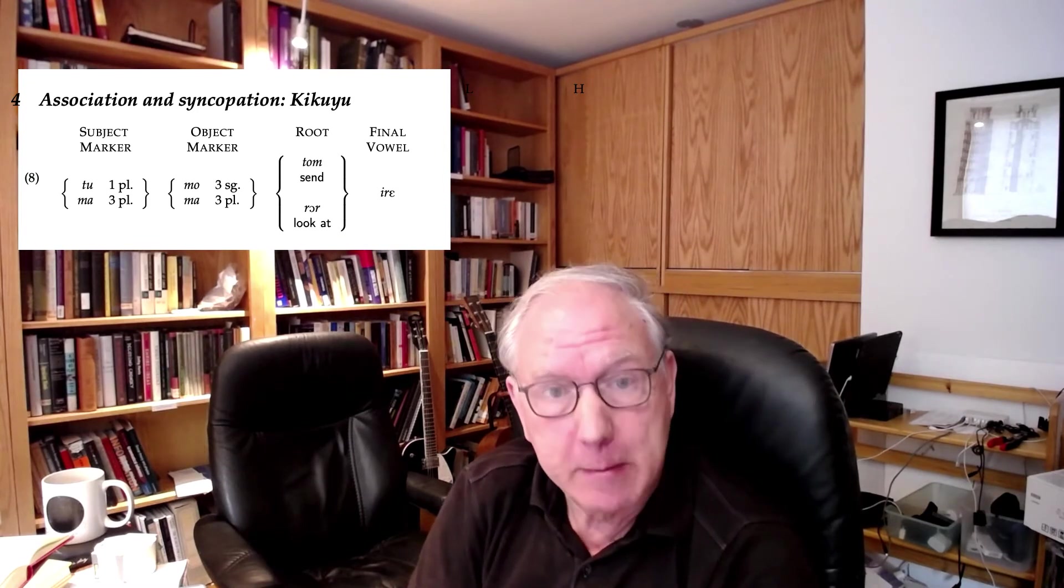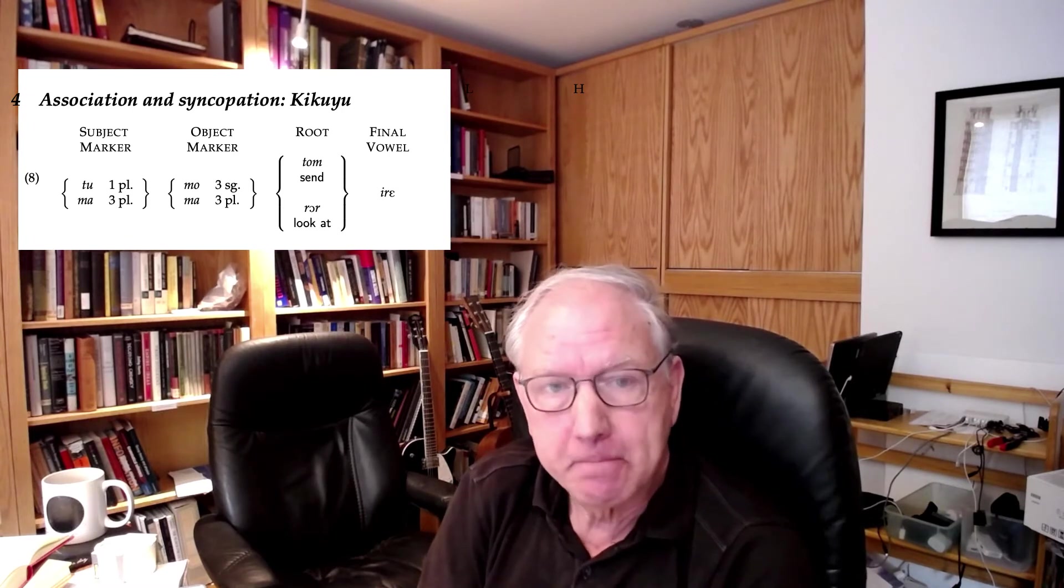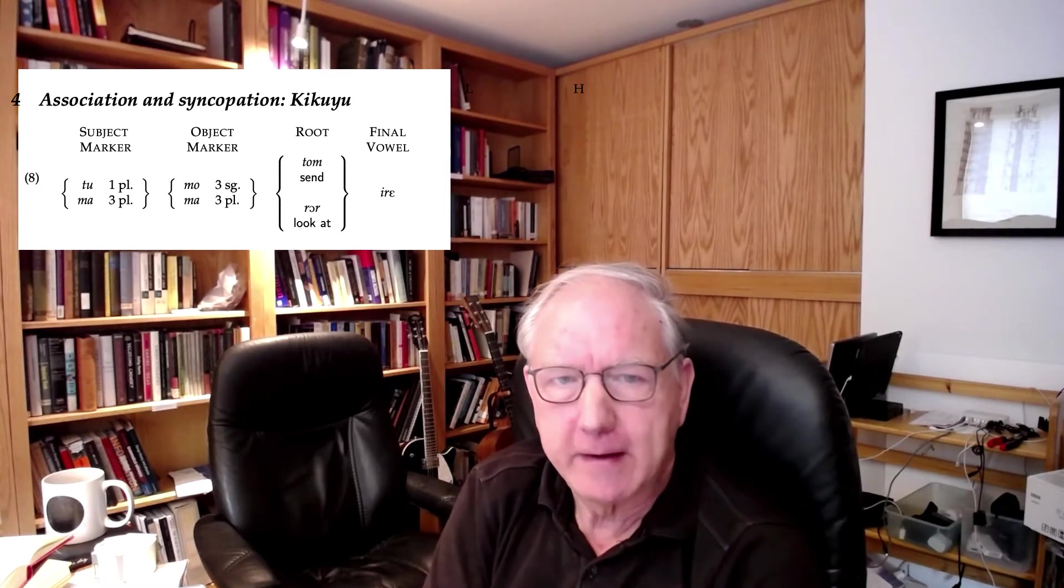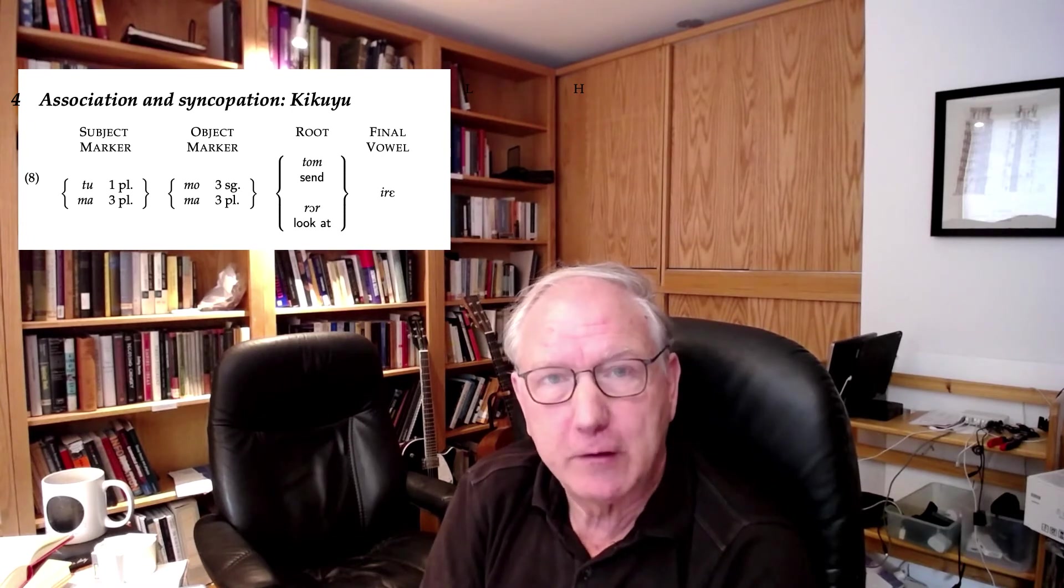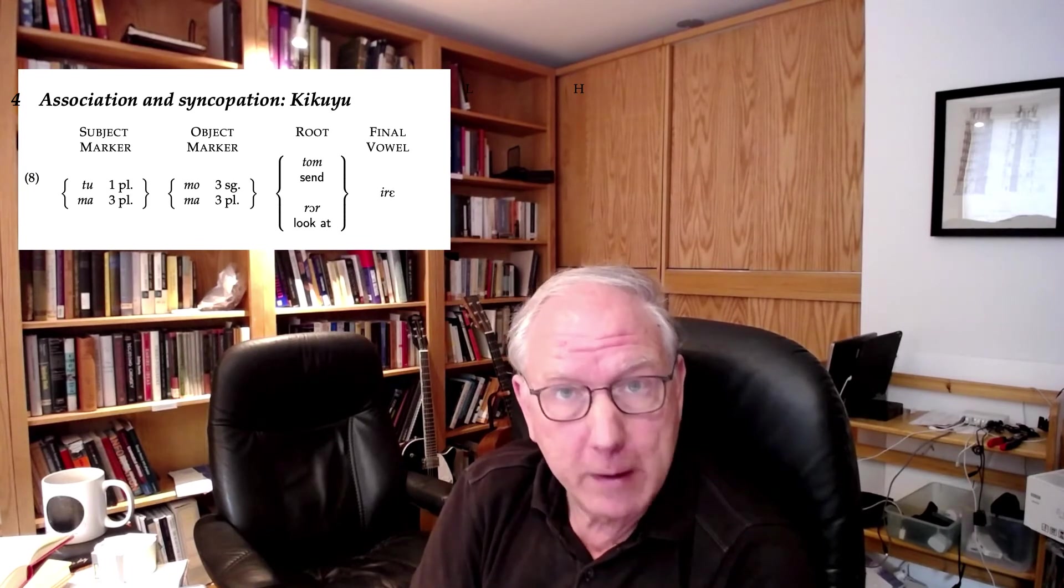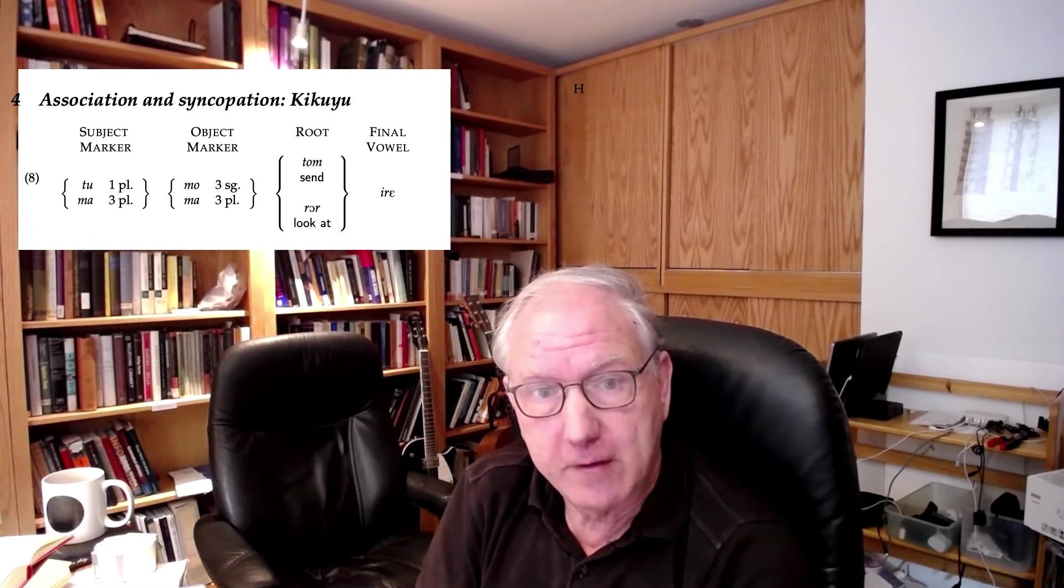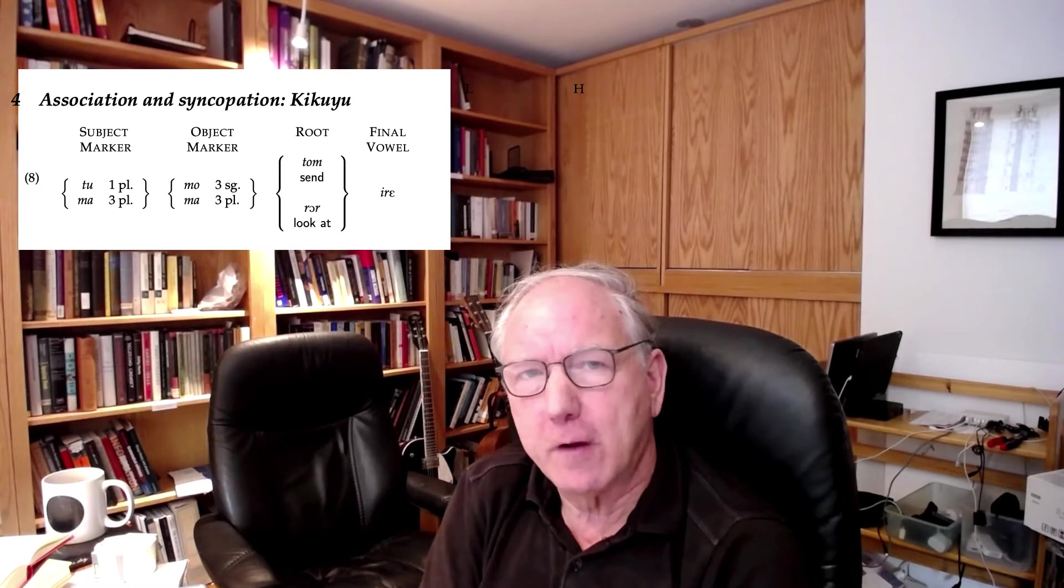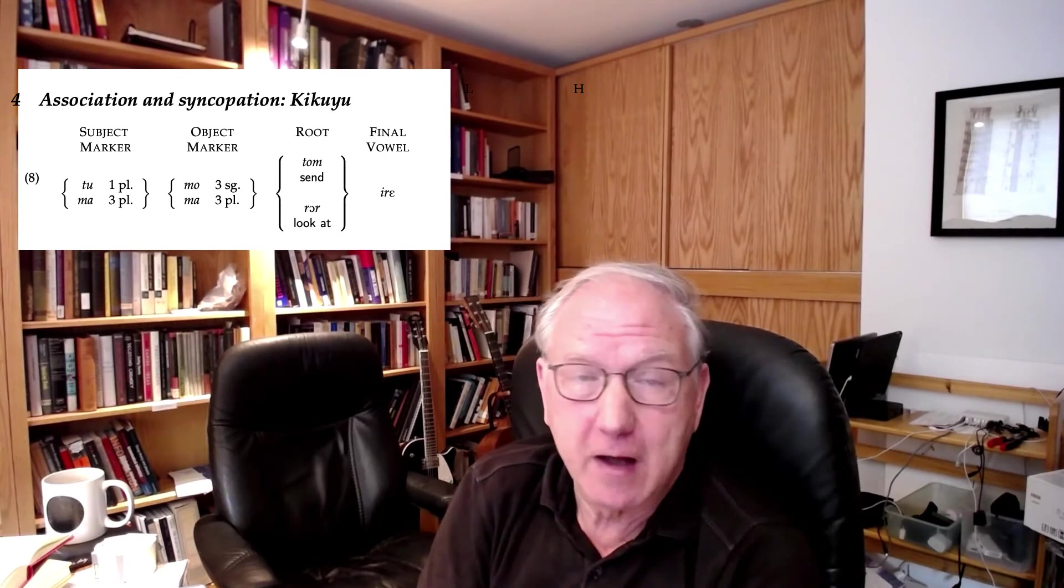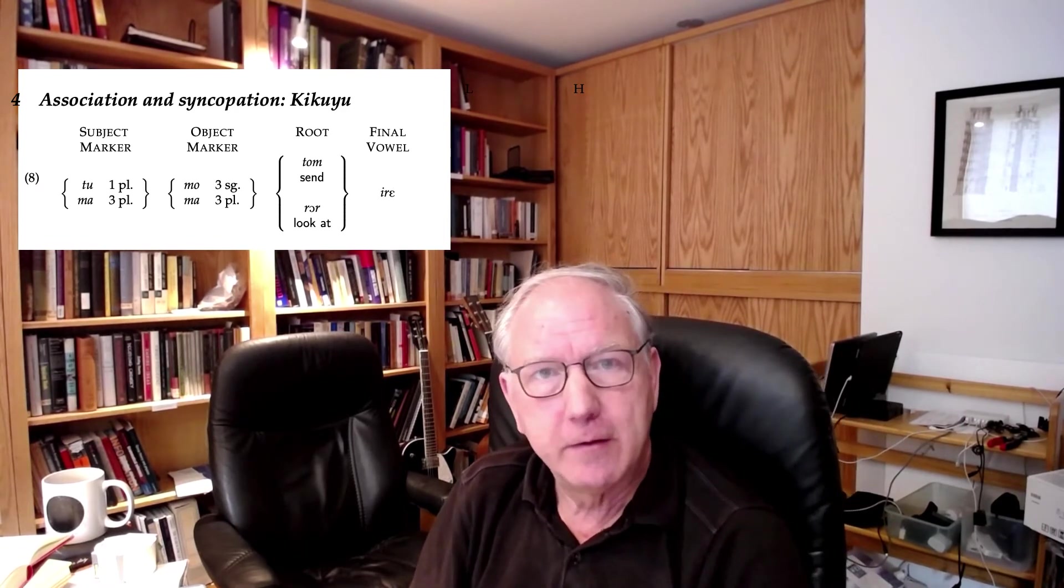We can say the same thing for the object marker position, and here we'll look at Mo and Ma. These are the third-person singular and the third-person plural. Bantuists call third-person singular class one and third-person plural class two. If you're a Bantuist, that's what we're looking at. And there are two possibilities, two tonal possibilities for each of the morphemes, and Mo and Ma represent the tonal characteristics of those two classes. There are two kinds of roots from a tonal point of view as well, and Toma represents one kind. It means send, and Ro represents the other. And Bantuists call the final morpheme in a finite verb the final vowel. And here the final vowel is not just a vowel. In fact, I-R-E. But we'll call it a final vowel nonetheless. So this is the structure of the verb that we're going to take a look at.